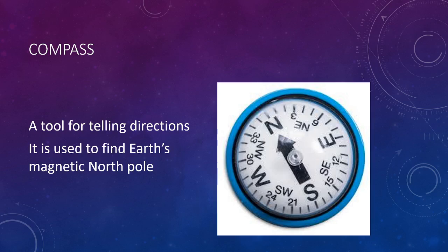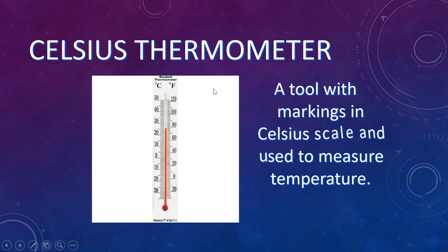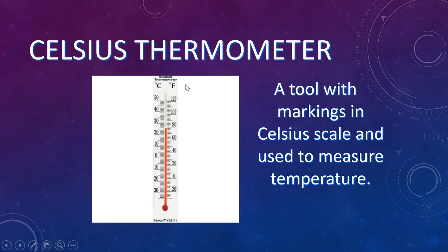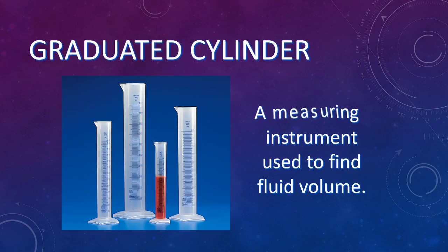Next we're going to be using a Celsius thermometer. In science class we will not be using Fahrenheit. So if you get a thermometer that has both on there, for your lab you would always write the Celsius side. Celsius is what we use in the metric system.